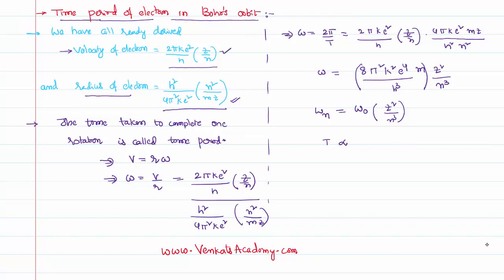Time period is inversely proportional, so time period is directly proportional to n³ by z². Or if you want to write an equation for frequency, frequency is the reciprocal of the time period. That implies frequency is directly proportional to z² by n³.